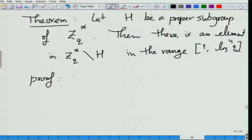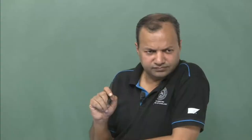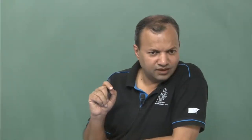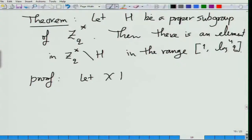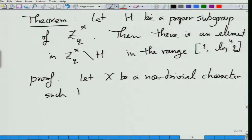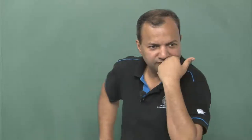Let us pick a character — not define one, as characters are already defined — pick a character which is 1 on all of H but is not the trivial character. Such a character always exists. Since H is a subgroup, you send H to 1 and then there are still many possibilities for choosing this character. The character group has the same size as z_q*. So fix this character.